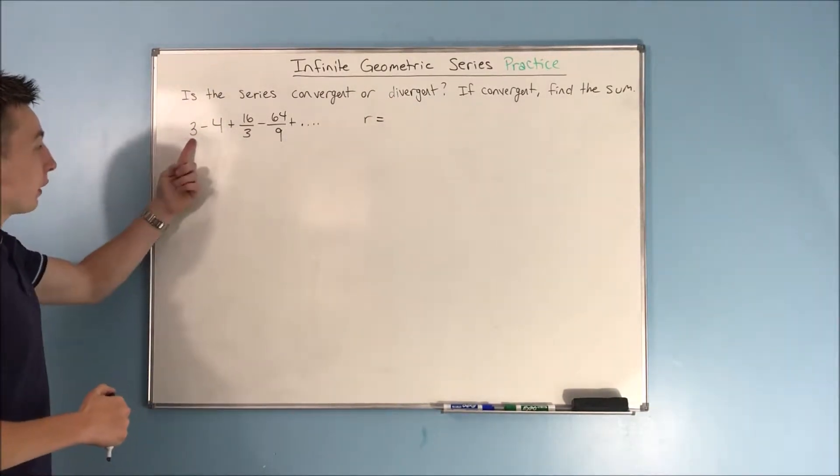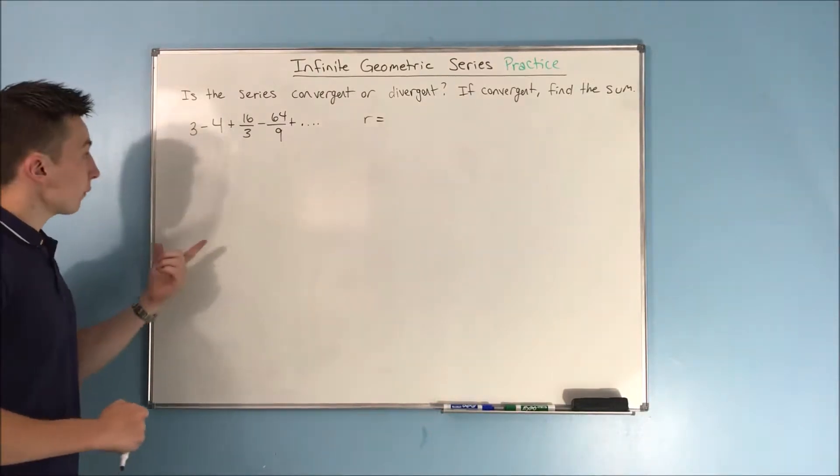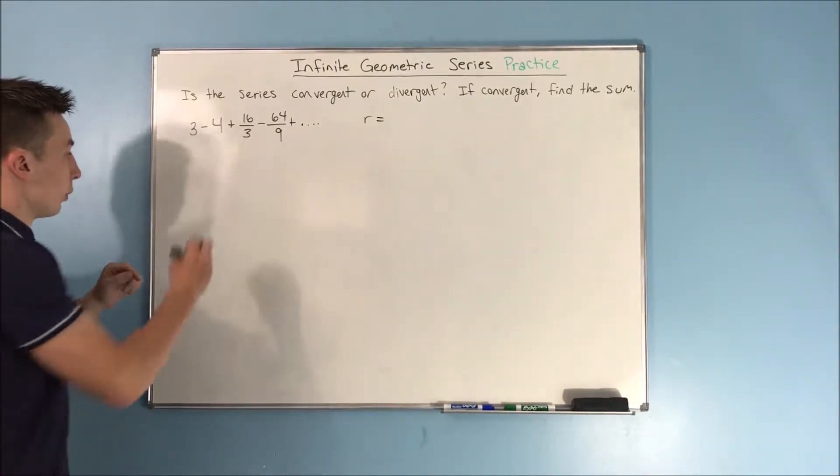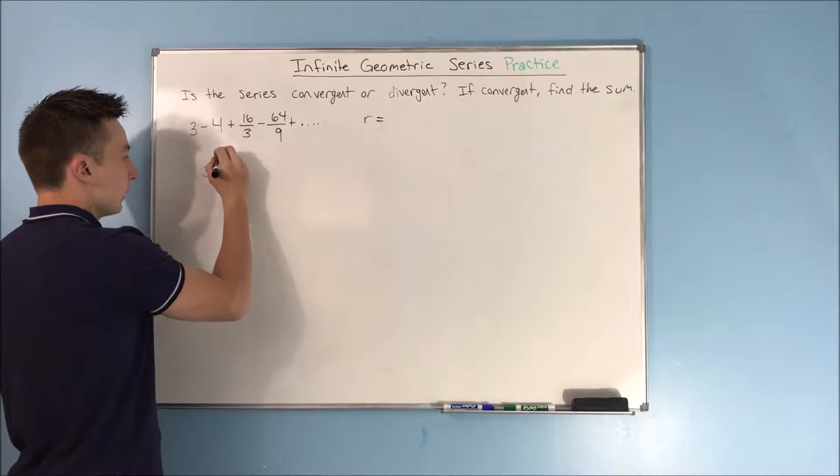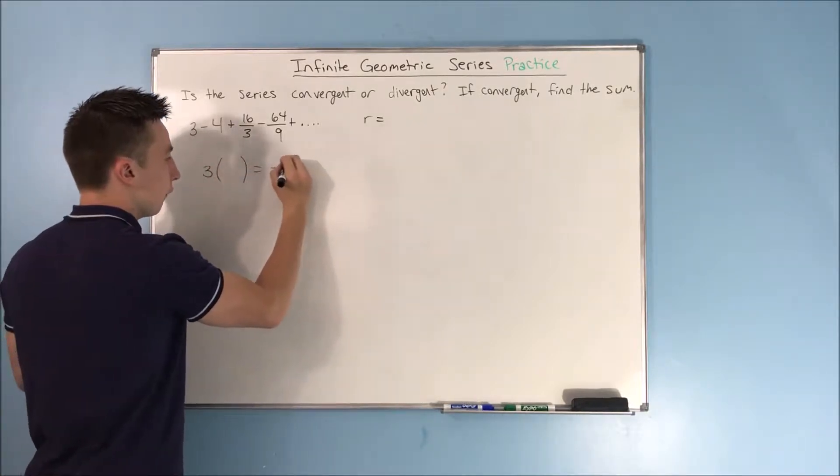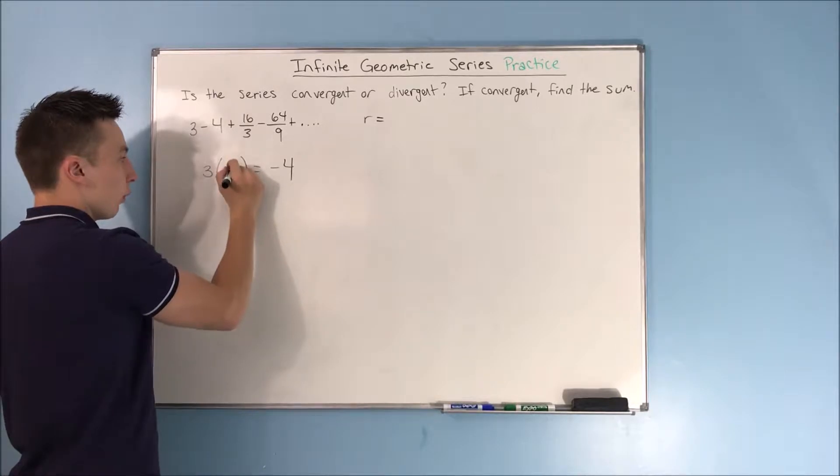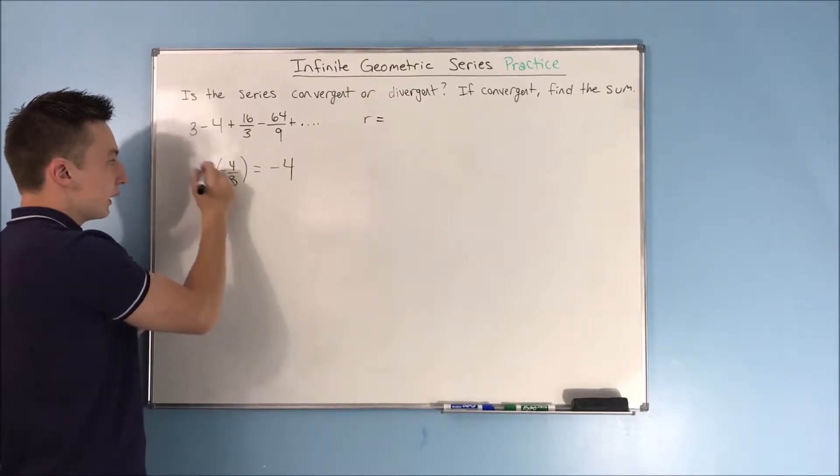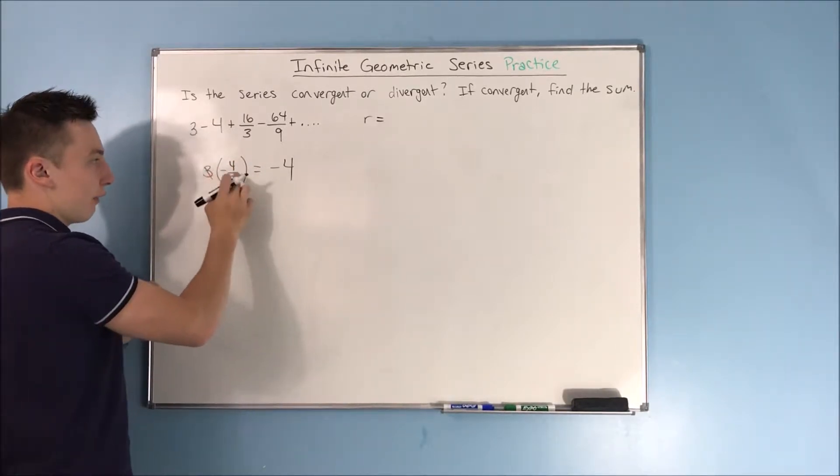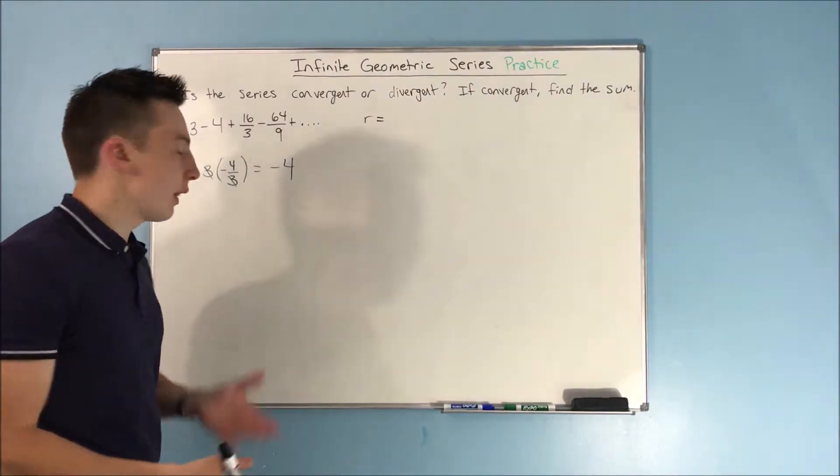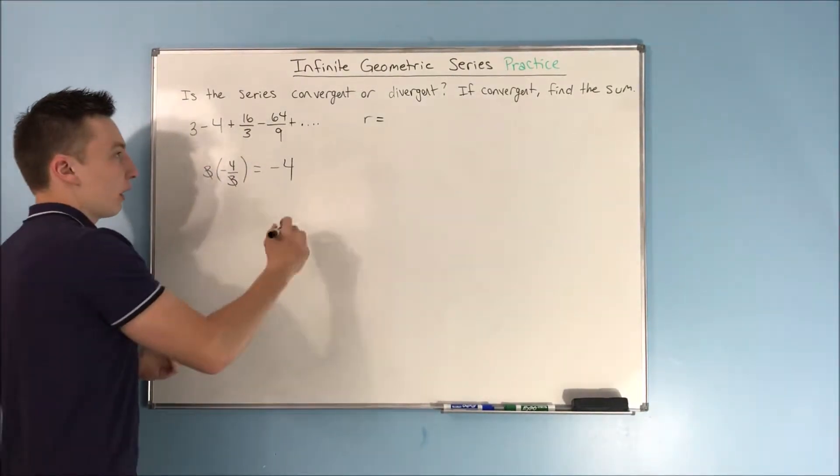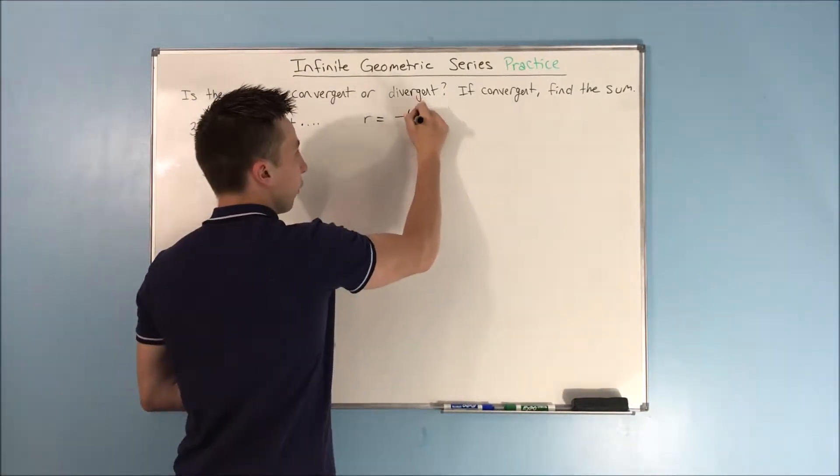Well, how do we get from 3 to negative 4? Well, we can multiply, right? If we do 3 times what equals negative 4, well, if we multiply by a negative 4 over 3, then the 3s cancel out, and you have a negative 4 equals negative 4. So, you can see here that our R is negative 4 over 3.